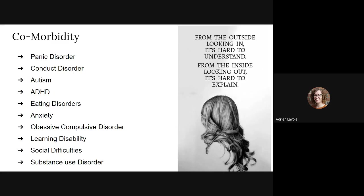The next slide talks about comorbidity — basically when you have two or more chronic conditions happening at the same time in one person. Unfortunately, with depression, it's more likely to have multiple diagnoses than to have only depression. It's not to say that one causes the other, though sometimes one might be more predominant or show up first. These conditions can interact and make treatment and recovery trickier. If you have depression, you're more likely to also have panic disorder, conduct disorder, autism, ADHD, eating disorders, anxiety, OCD, learning disabilities, social difficulties, and substance use disorder.